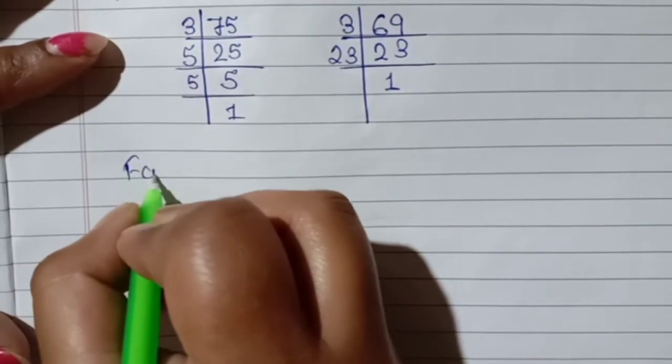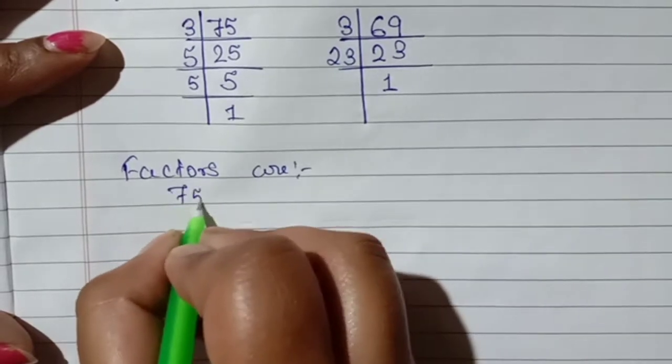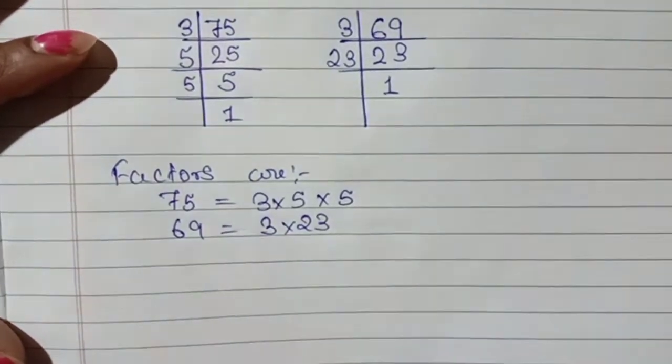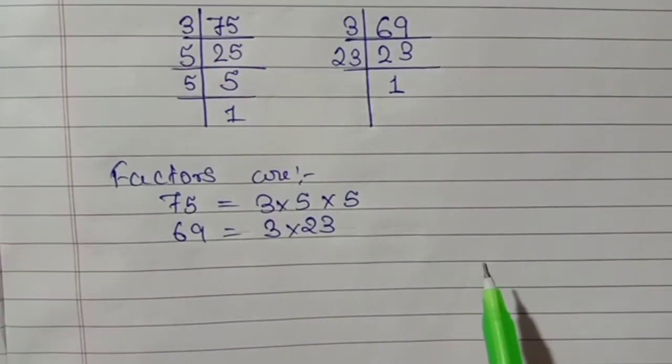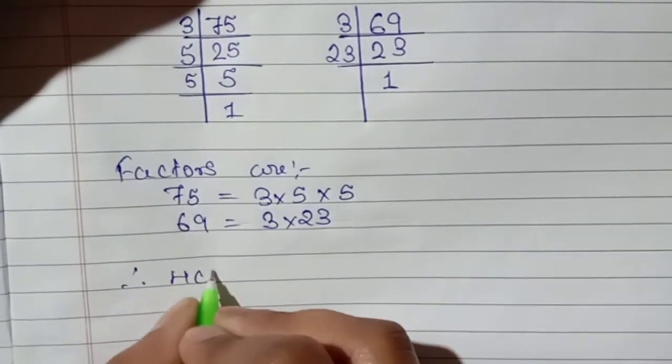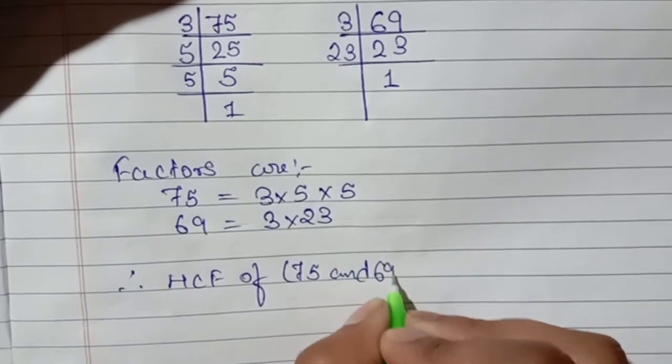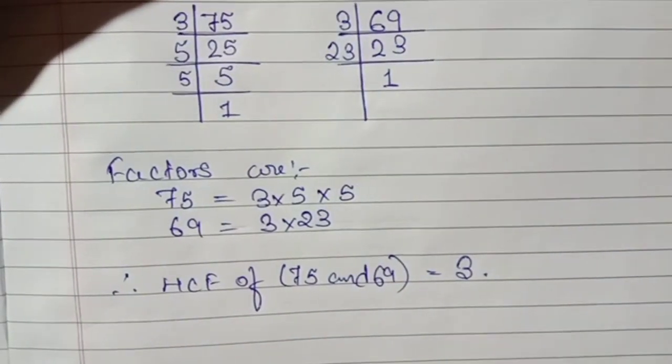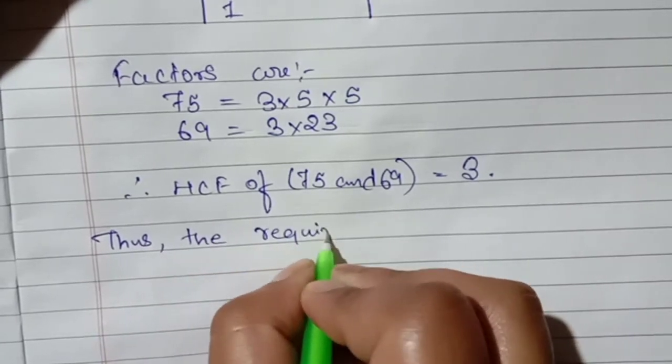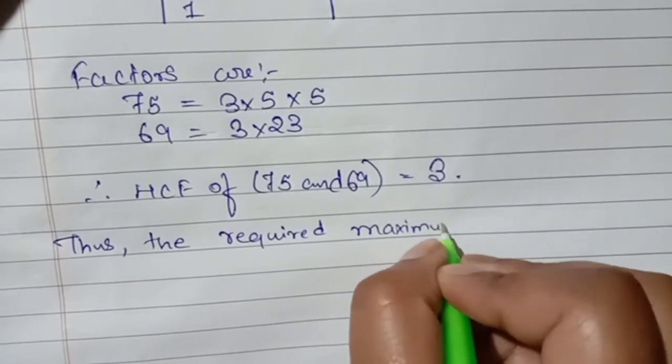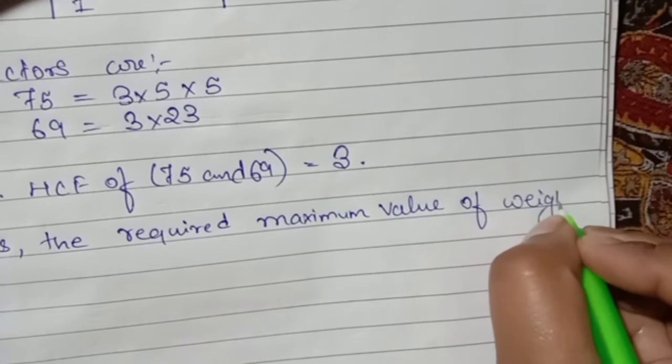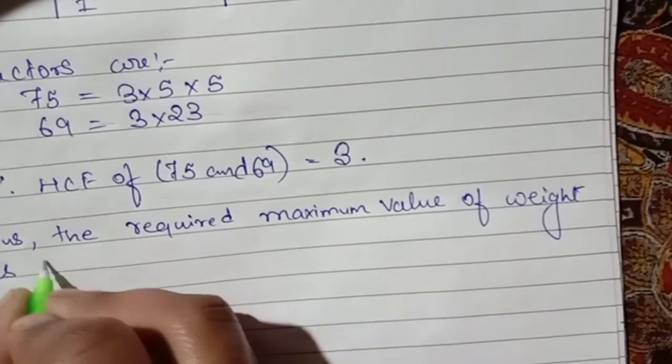Now, factors are: 75 equals 3 into 5 into 5, 69 equals 3 into 23. Now we have to check which numbers are common in both. If we check, only 3 is common. Therefore, HCF of 75 and 69 is equal to 3. This is the required maximum value of weight. The maximum value of weight is 3 kg.